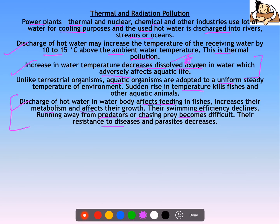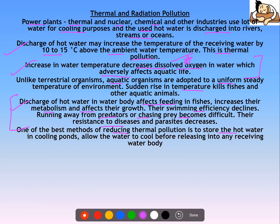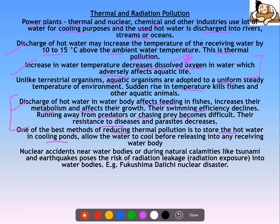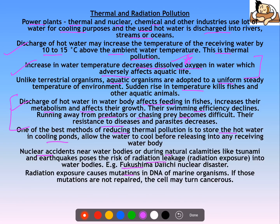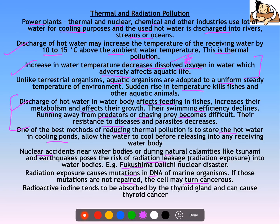One of the best methods of reducing thermal pollution is to store hot water in cooling ponds, allowing it to cool before releasing it into the water body. Next is nuclear or radiation pollution. When nuclear accidents occur near water bodies due to natural calamities like tsunamis or earthquakes, radiation leakage can occur — for example, the Fukushima nuclear disaster in Japan. This can cause mutations in DNA of all organisms — marine, aquatic, terrestrial, and plants. If those mutations are not repaired, the cell might turn cancerous. For example, radioactive iodine tends to be absorbed by the thyroid gland and can cause thyroid cancer.